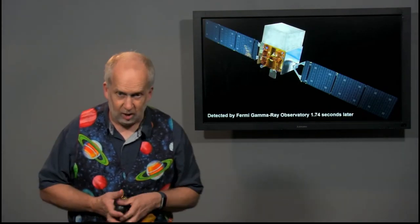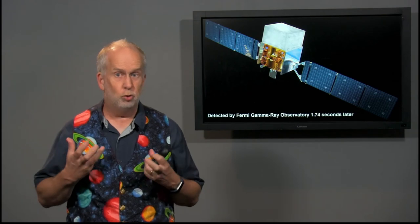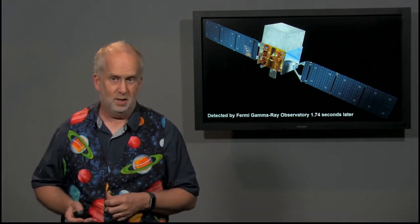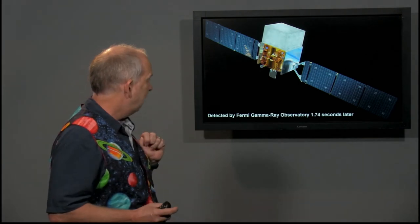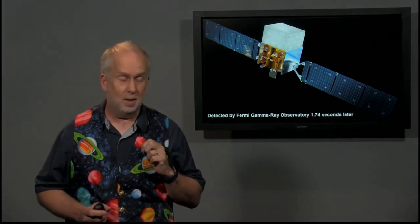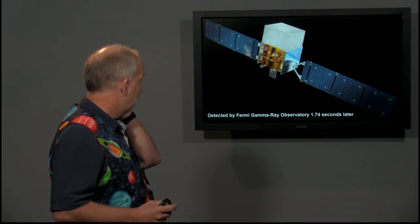So that was exciting enough—we've actually seen two neutron stars merge. What was more exciting was that 1.74 seconds later, a gamma-ray burst was picked up by the satellite, the Fermi Gamma-ray Observatory.